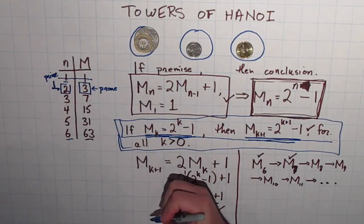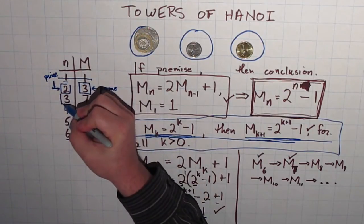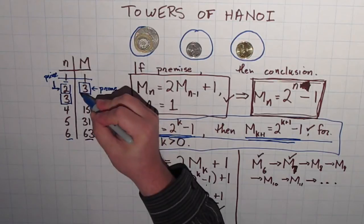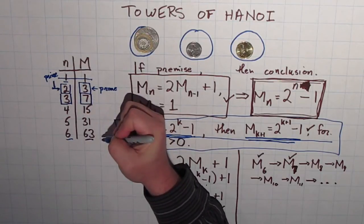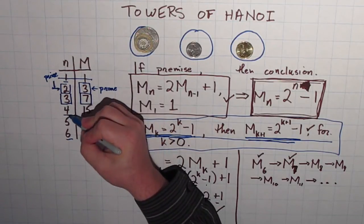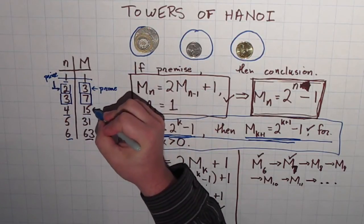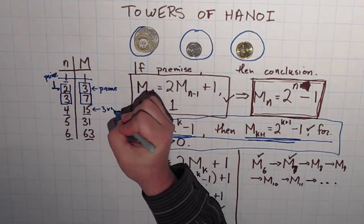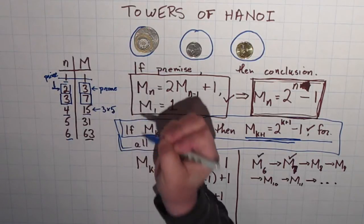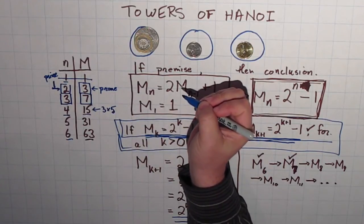Alright, you might go, yeah, so what? Big deal. Well, let's look at the next one. 3 is a prime number and so is 7. 4 is not a prime number and neither is 15. 15, of course, is 3 times 5.